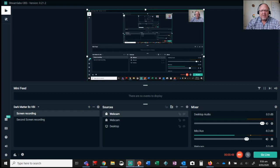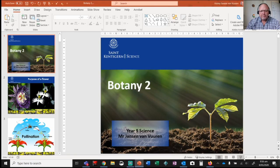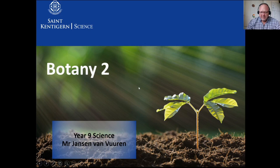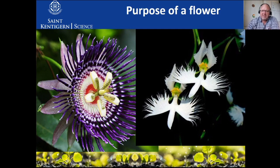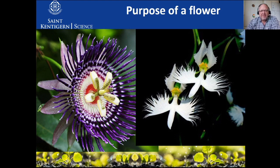Look at these flowers - that is just an amazing orchid, called the holy ghost orchid or the holy spirit orchid. It looks like a dove, but in there you have the male and the female parts. You can see the big anthers, all the petals, and the sepals in the background - an amazing flower. And over there, the sticky stigma. So what is the function of a flower?